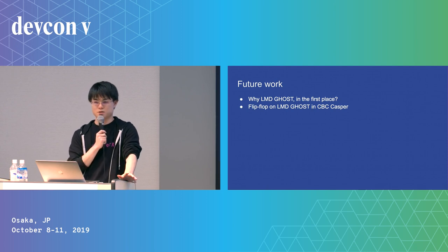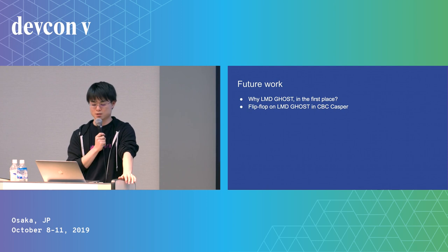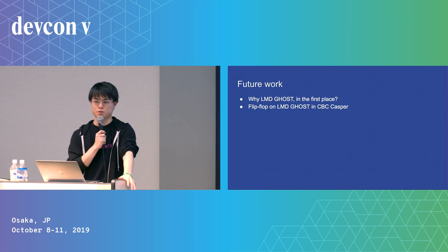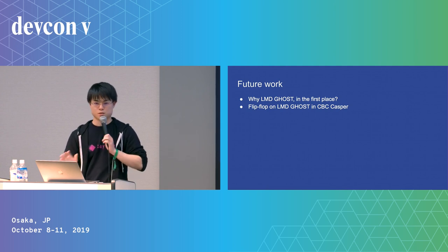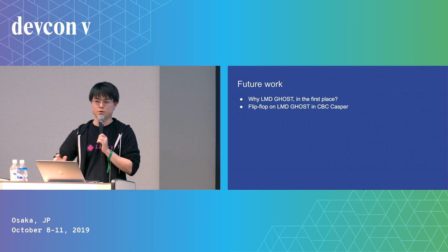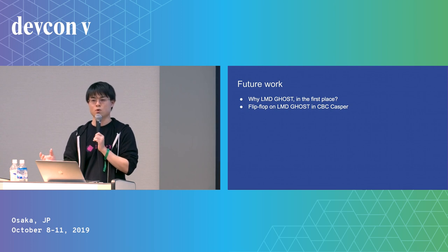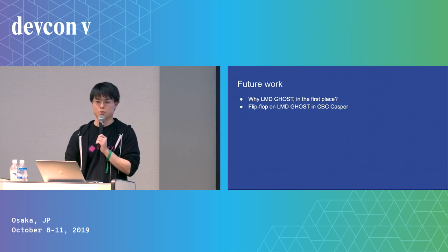This raises the question of why use LMD ghost instead of a non-LMD variant of ghost—especially since there's no CBC Casper in 2.0 currently, making fork choice easier to manipulate. An interesting related topic is flip-flopping LMD ghost in CBC Casper: because every message is enforced to follow the fork choice, the analysis gets complicated, but it basically mitigates the flip-flop strategy.